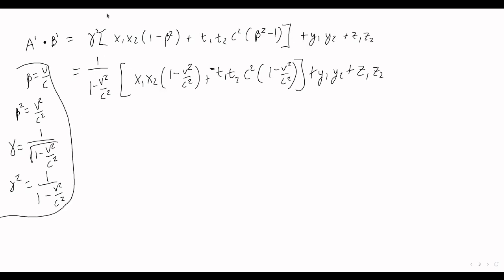And so all of those things cancel out. And so A prime dot B prime was just x1 x2 plus y1 y2 plus z1 z2 minus c squared t1 t2.